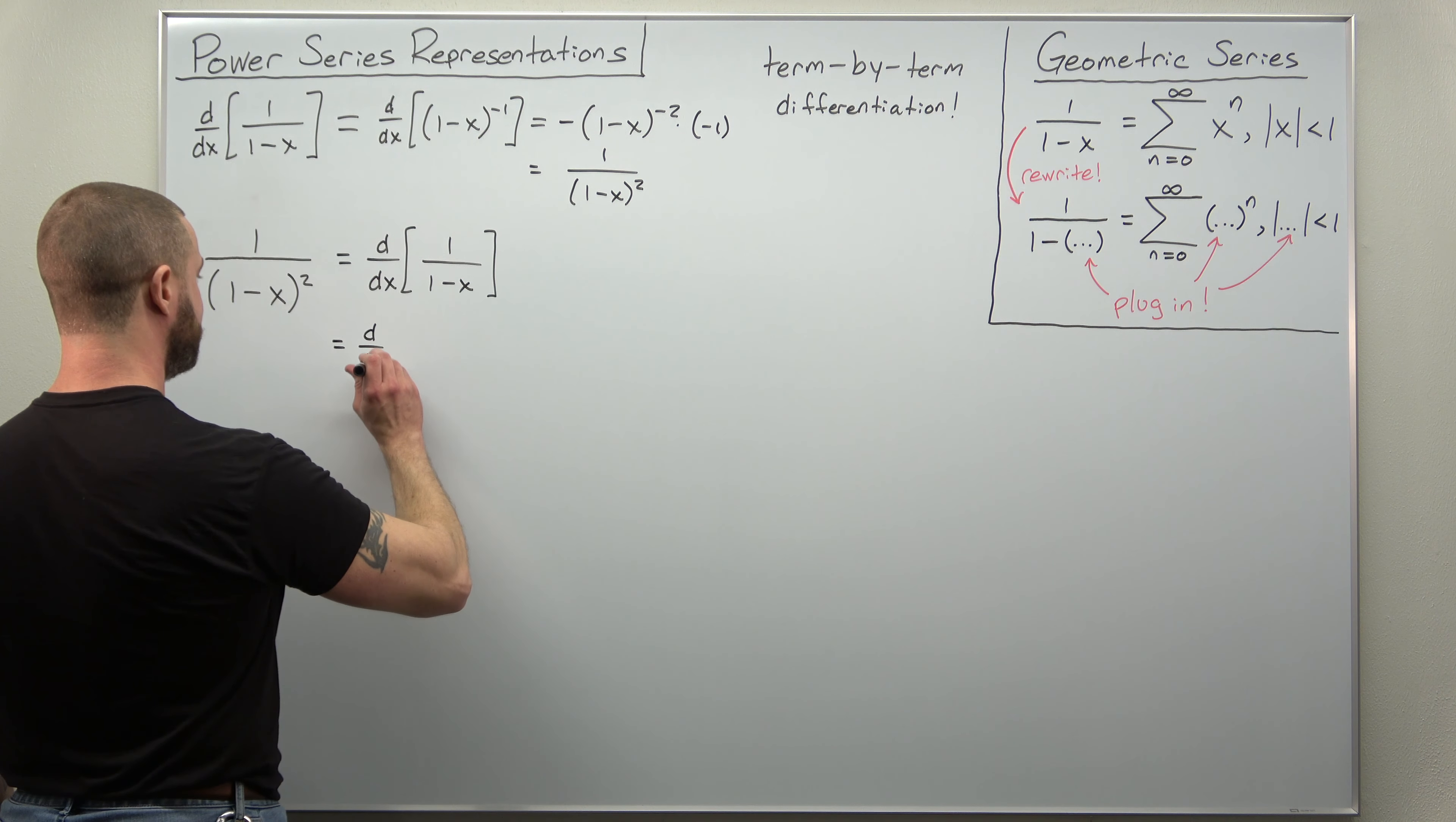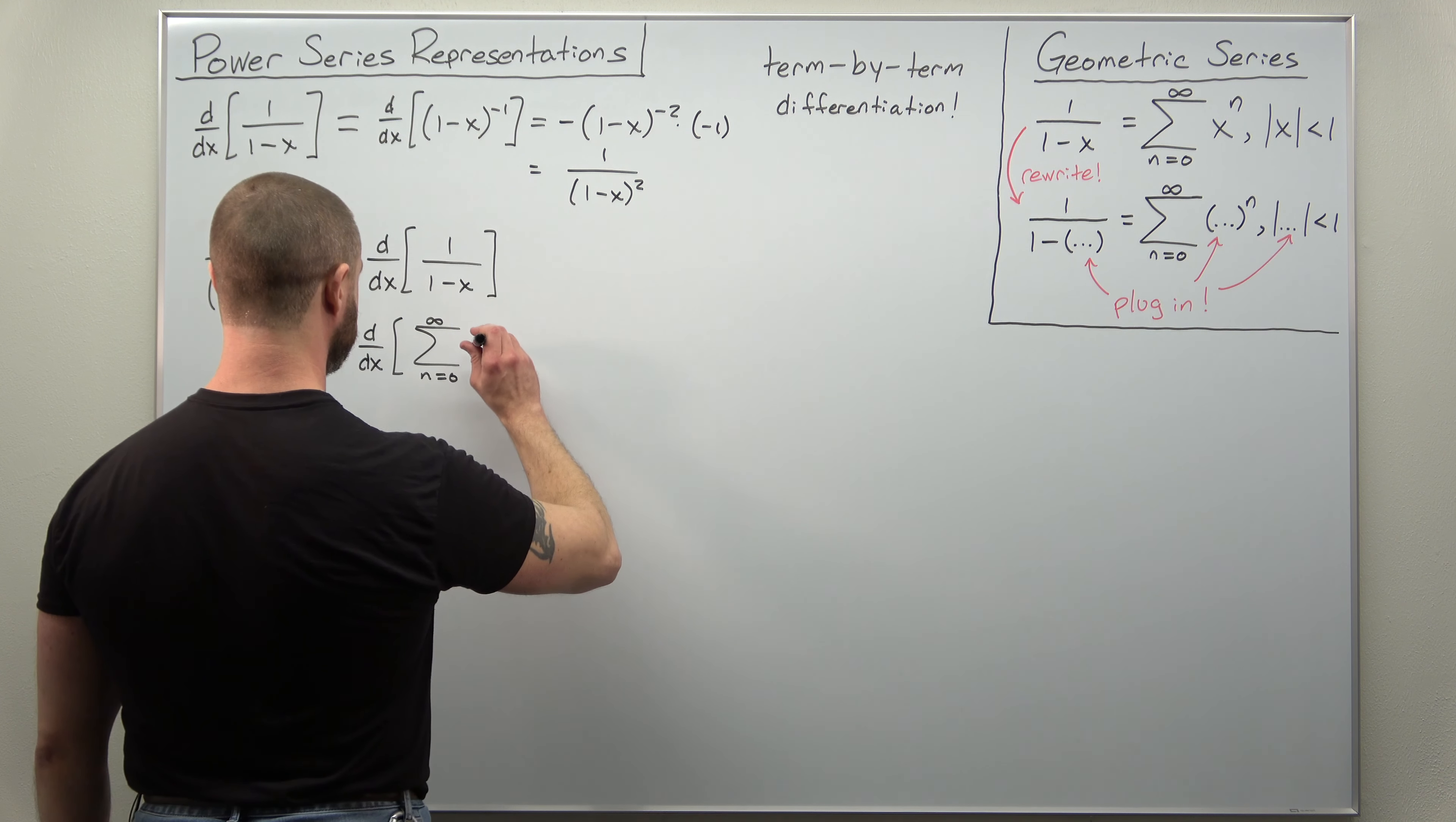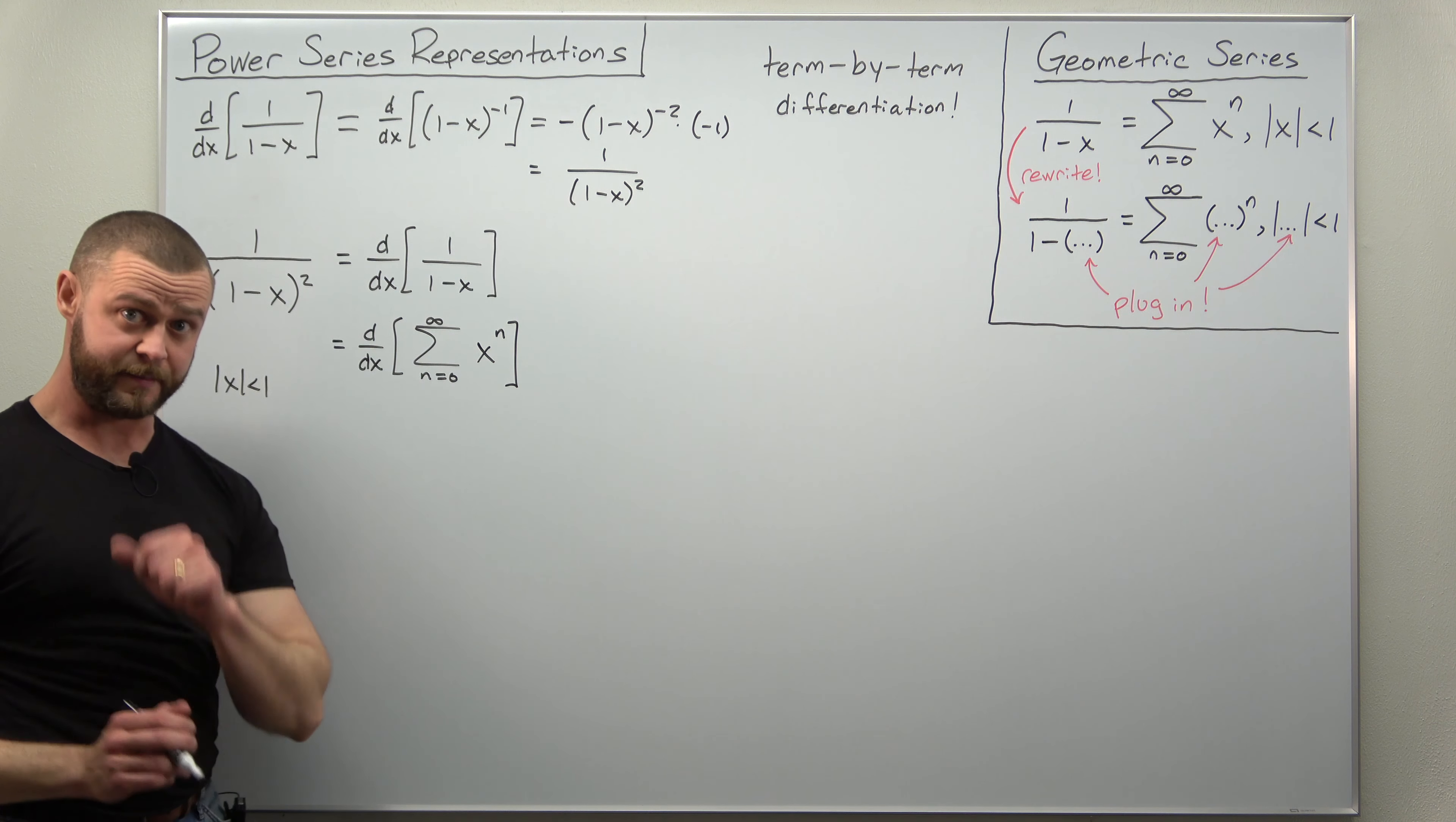That is just your basic result from the geometric series, so we're going to make that replacement. We're not going to take the derivative yet, but I'm just replacing 1 divided by 1 minus x with its power series representation, the sum from 0 to infinity of x to the n. And of course that's going to be valid when absolute value of x is less than 1, that's your interval of convergence for the geometric series.